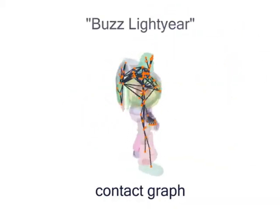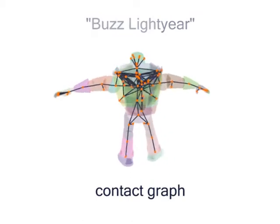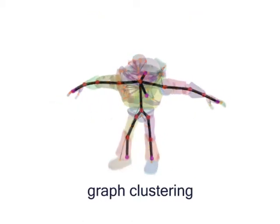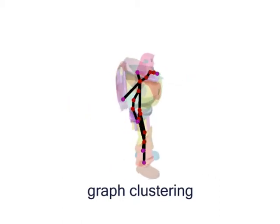In this final example, we are running the automatic pipeline on an input mesh that shows some resemblance to the Buzz Lightyear character in Disney's Toy Story.